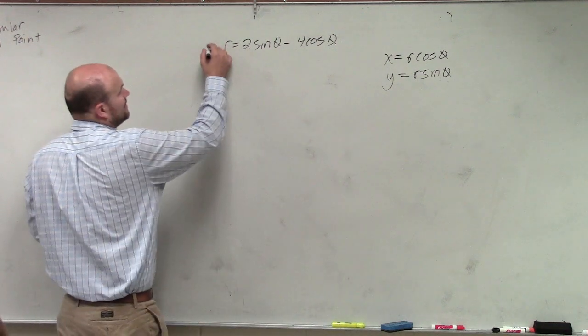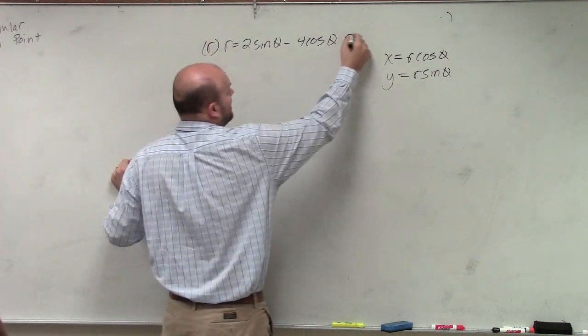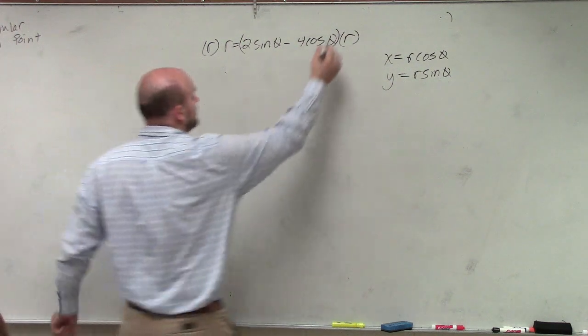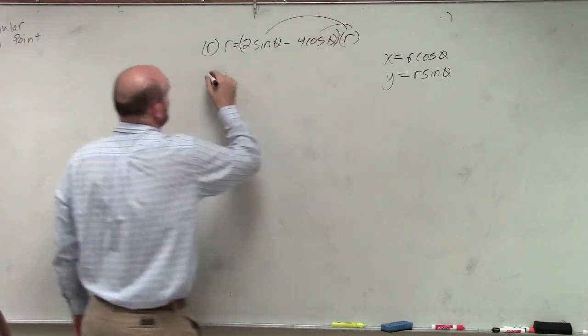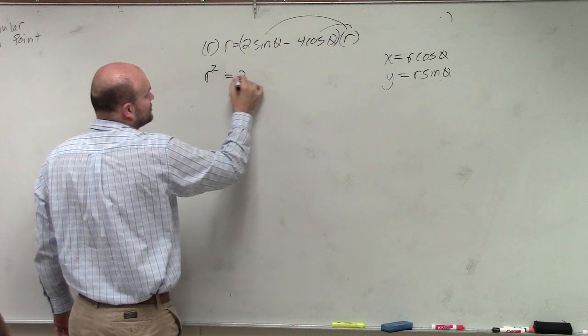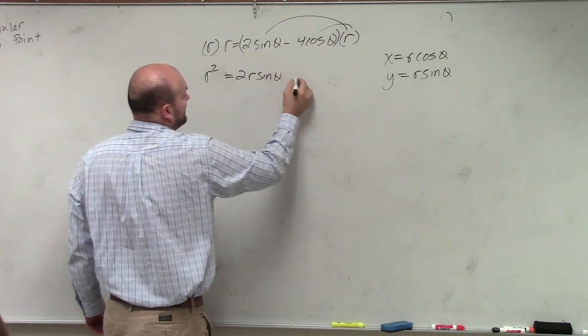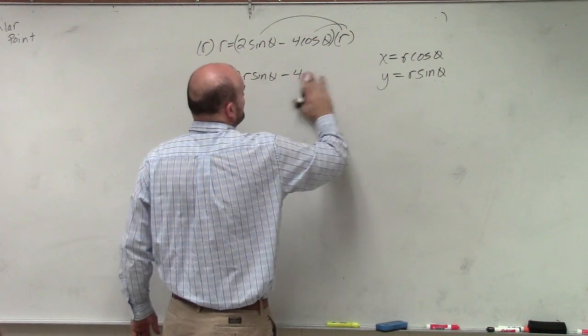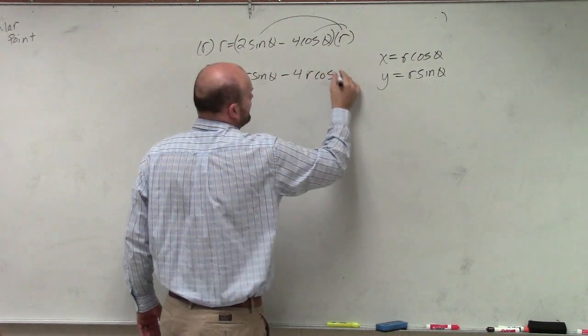So what I'm going to do is I'm going to multiply by r on both sides, because as long as you do it on both sides, you're fine. Apply a distributive property. We have r squared equals 2 r sine of theta minus 4 r cosine of theta.